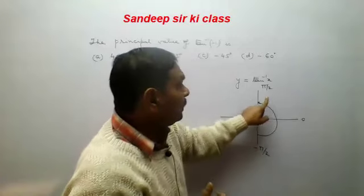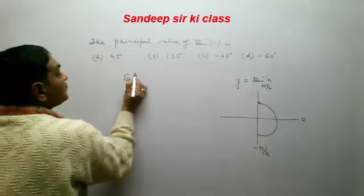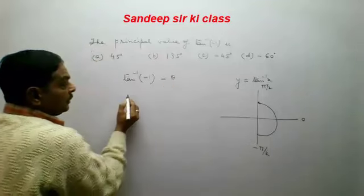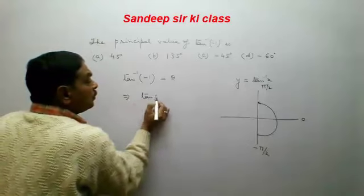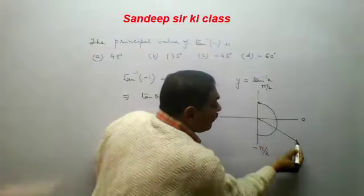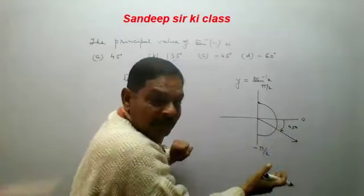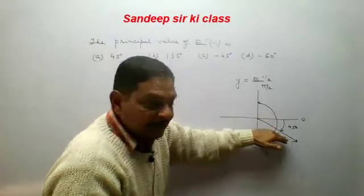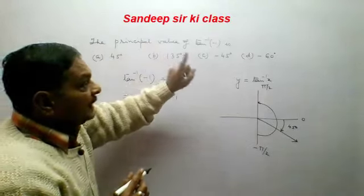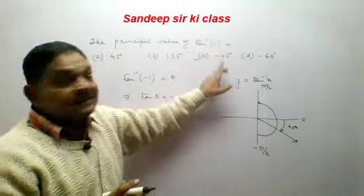Here the value of tan⁻¹(-1) is to be found. Let this value equal θ, so tan θ = -1. If θ is -45°, the angle is in the clockwise (negative) direction, and at that angle the function value is -1. So option C is correct: tan⁻¹(-1) = -45°.